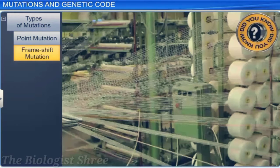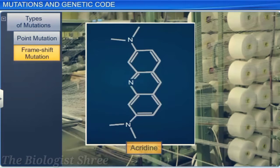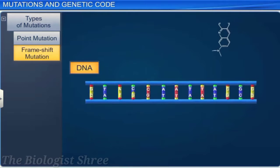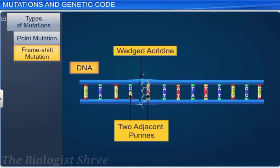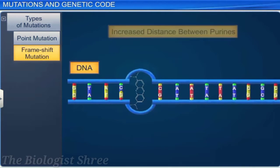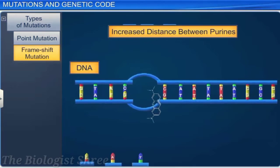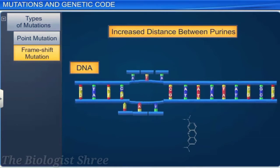Did you know that frame shift mutation is common among textile workers? This is because they are often exposed to acridine dyes such as 5-aminoacridine, which enters their bodies through inhalation or physical contact. These dyes get intercalated or wedged between two adjacent purines, thus increasing the distance between them from 3.4 angstroms to 6.8 angstroms, leading to frame shift mutation.